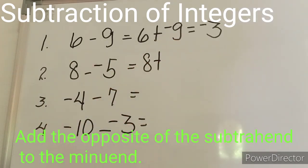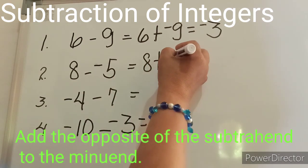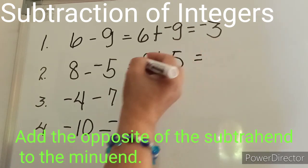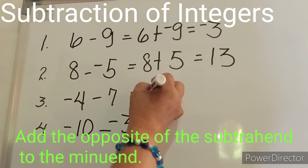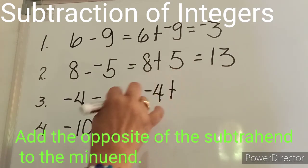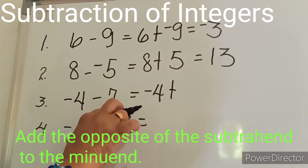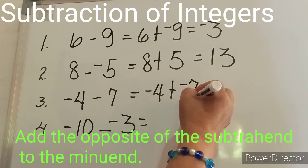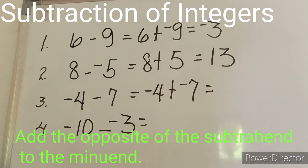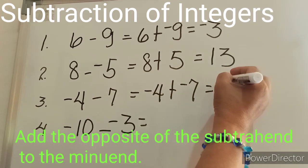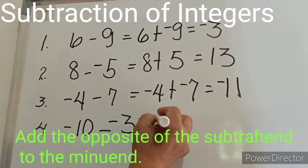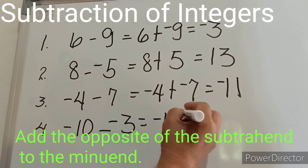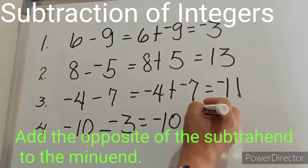Next: eight, we add the opposite of the subtrahend. The given is negative five, so the opposite is positive five. Thus the final result is eight plus five, giving us an answer of thirteen. Next: negative four, we add the opposite of the subtrahend. The subtrahend seven is positive, so it becomes negative. We are now adding like-signed numbers: four plus seven is equal to eleven, and we affix their common sign to the result.